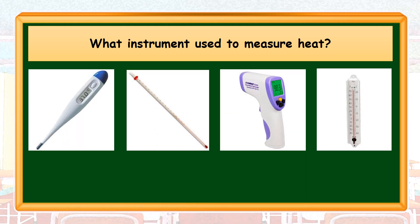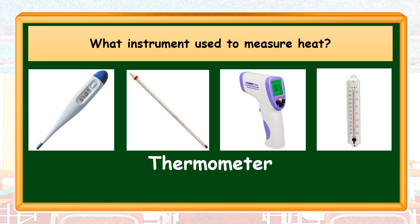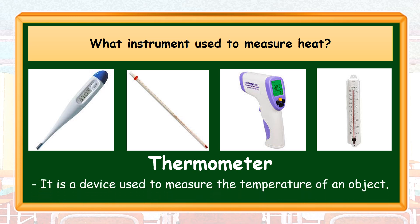Are you familiar with these devices? Have you used one of these? These are thermometers — a device used to measure the temperature of an object. Thermometers have two types: the digital thermometer, which shows the number immediately, and the analog thermometer that uses mercury, which goes up when in contact with hot objects or high temperature.